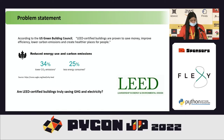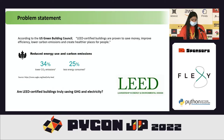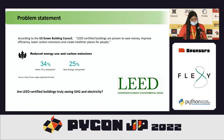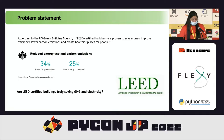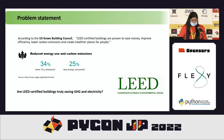This is where the problem statement comes in. According to the US Green Building Council, LEED certified buildings can save a lot of money, and they claim that compared to non-LEED buildings, certified buildings will save about 35% more energy and GHG. As a researcher or engineer, everyone needs to question whether this is actually true and whether the data supports that. Today I'll show how I've done that using Python.